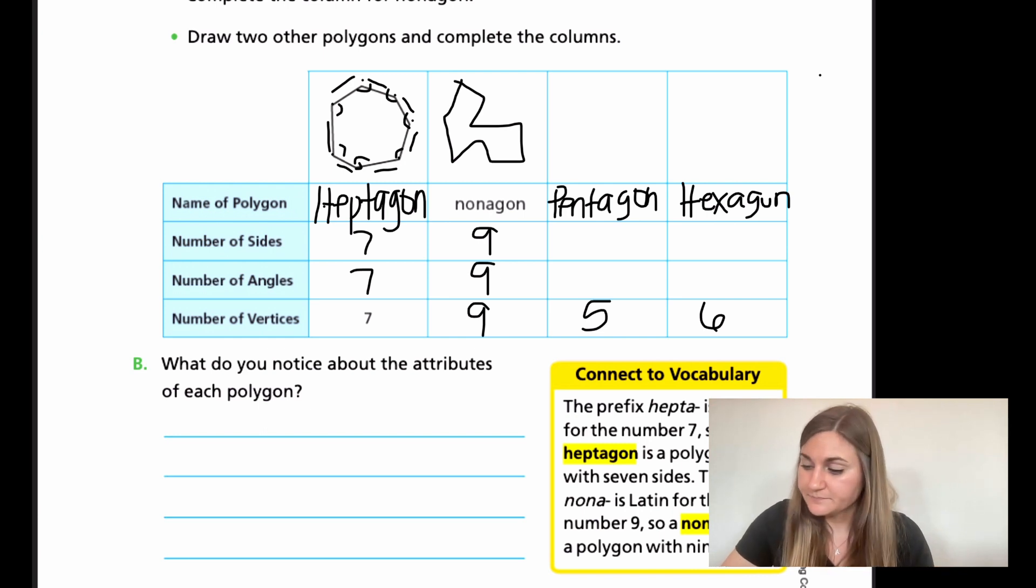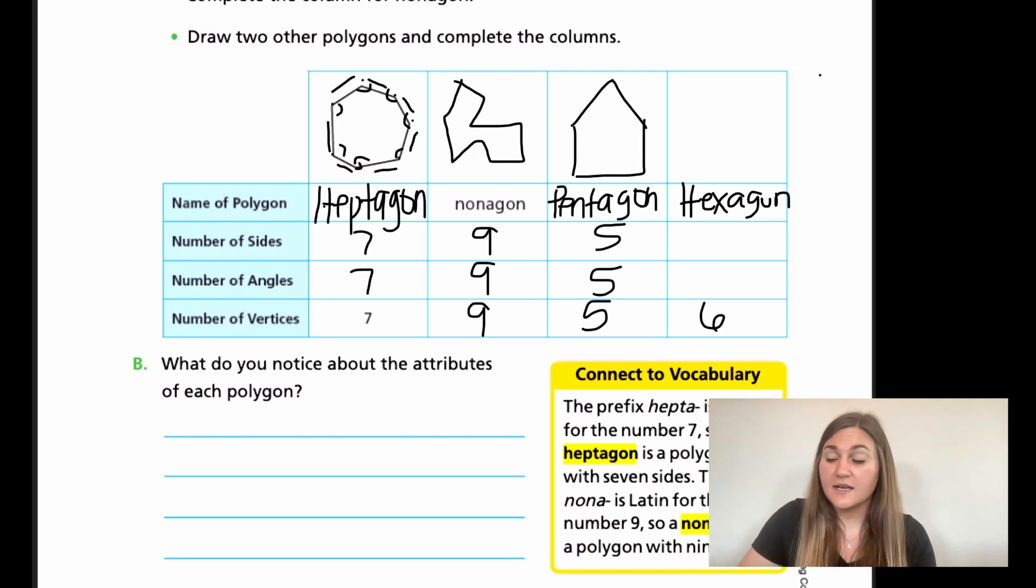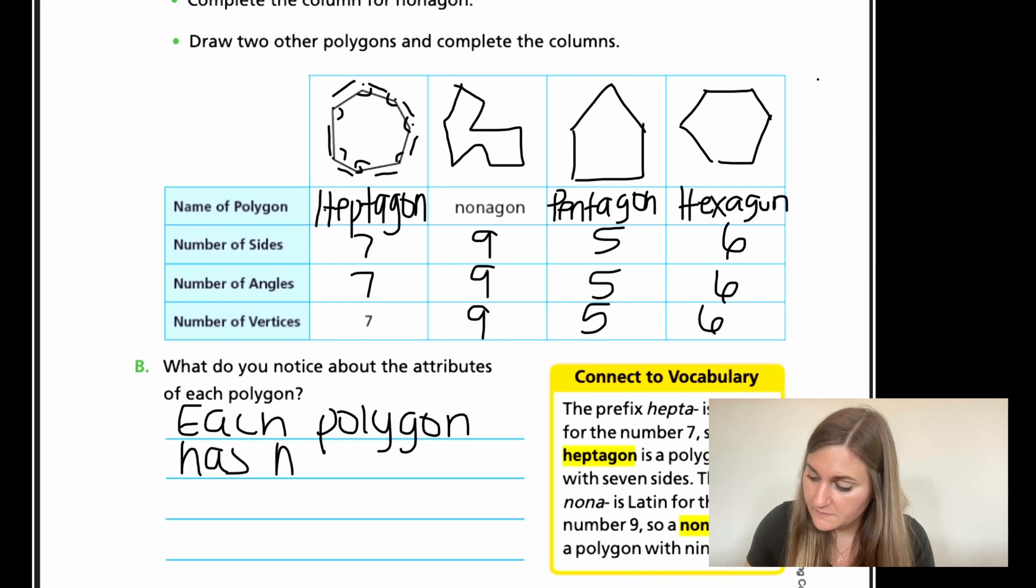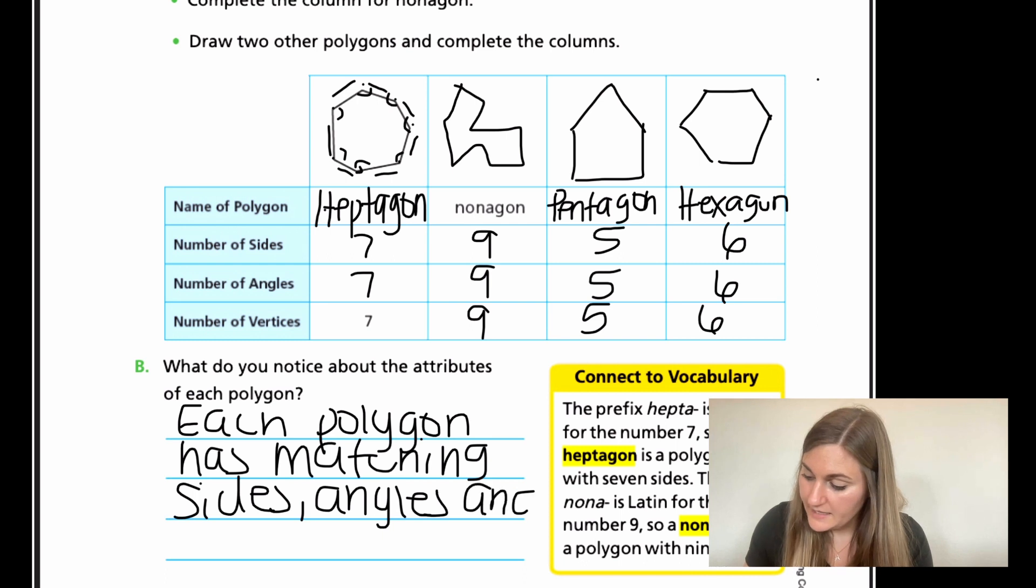So now we're going into the Pentagon. So the Pentagon looks like a little house, right? With five sides and five angles and five vertices. And then a hexagon is the one that I did on the previous page. So that's a hexagon and it has six sides, six angles and six vertices. So what is the pattern that we're noticing about this is that each polygon has matching sides, angles and vertices.